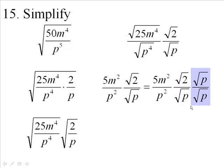Why do I want to do that? Because the bottom turns into the square root of p squared. The top will be the square root of 2p.